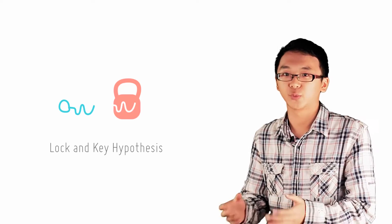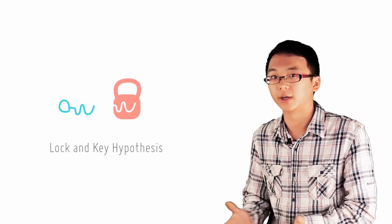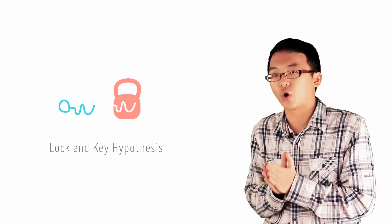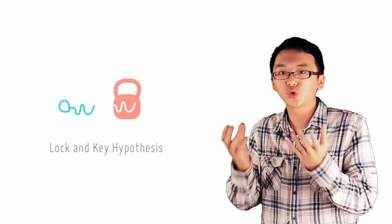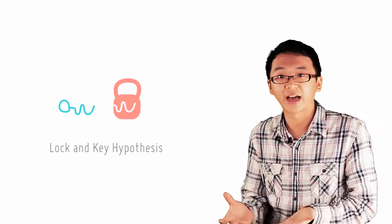So we know that the active site is where the chemical reactions occur. But how do reactions occur exactly? There are two theories as to the mechanism of action.